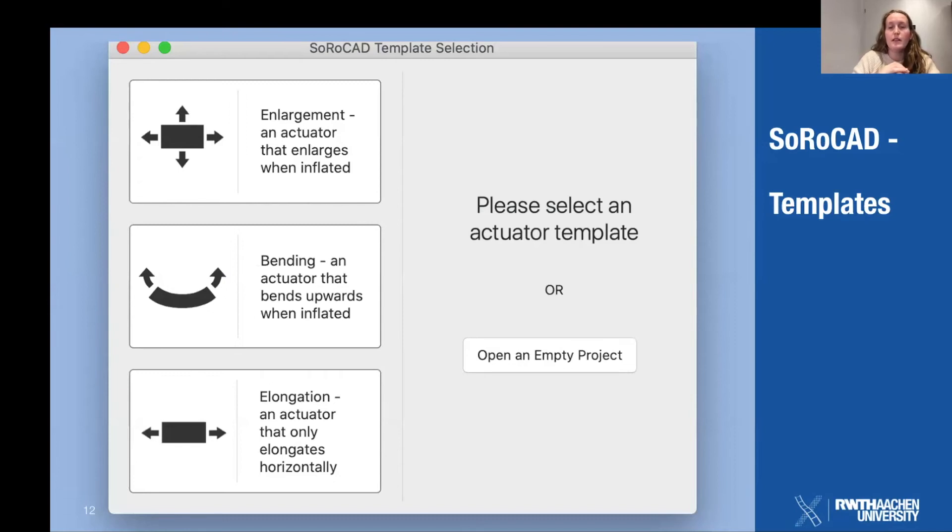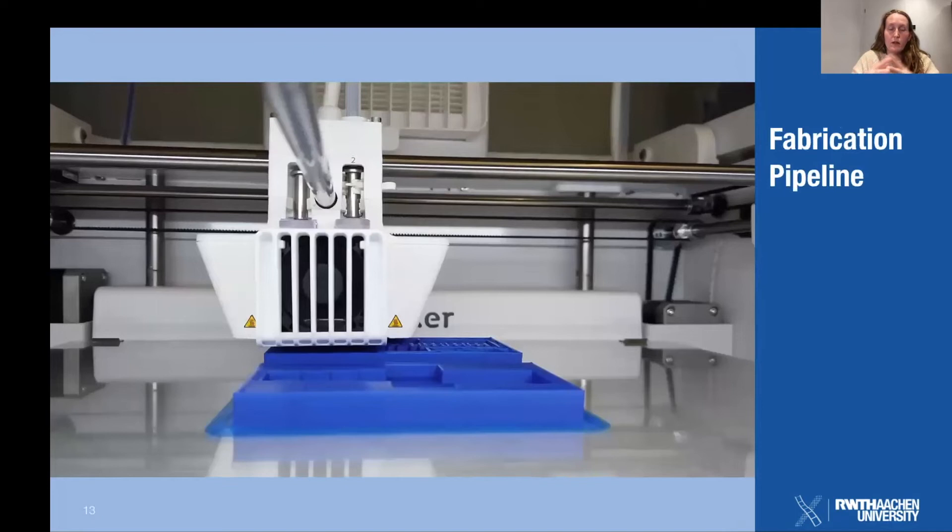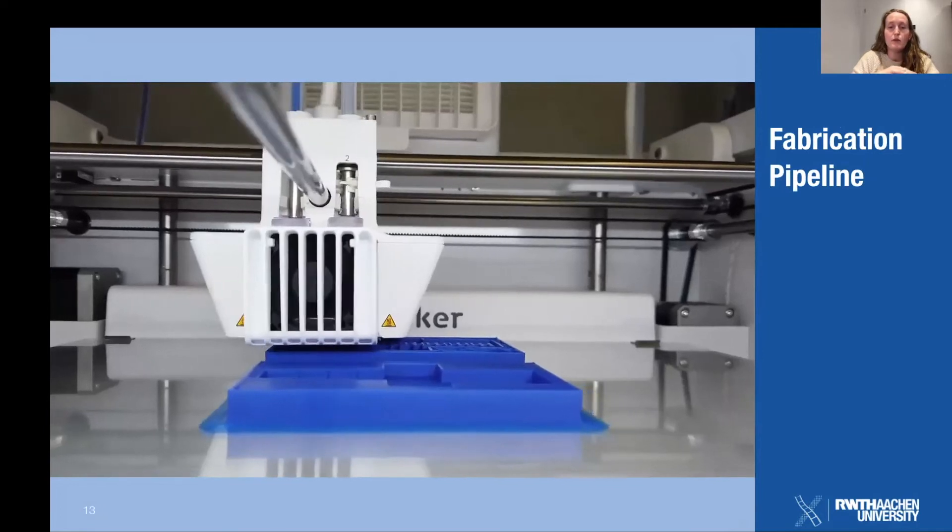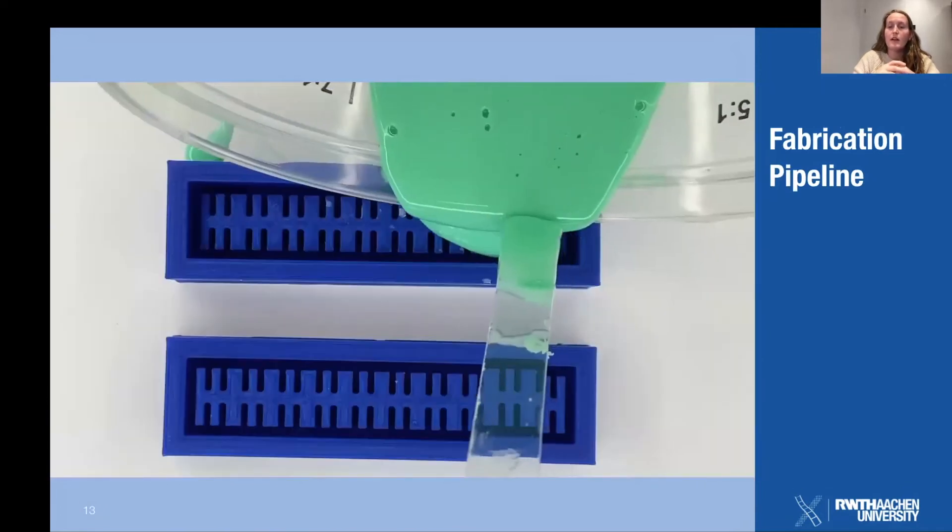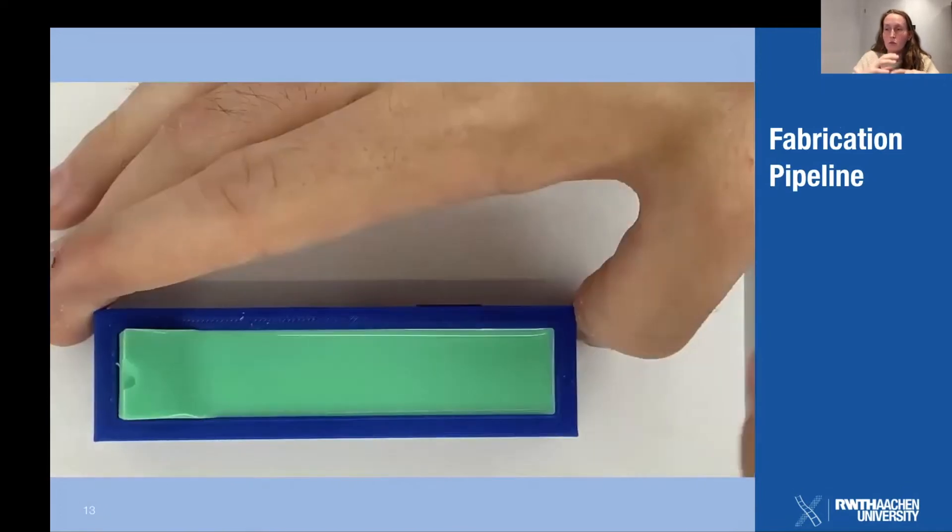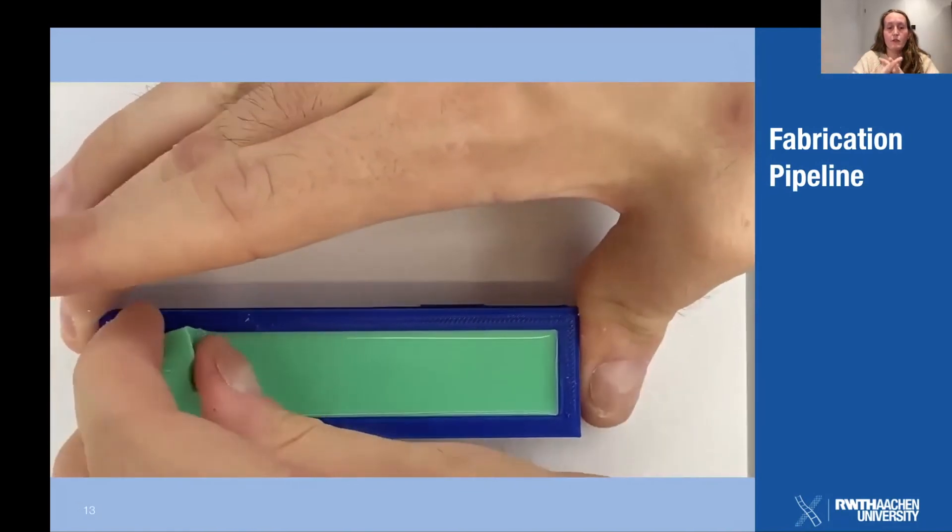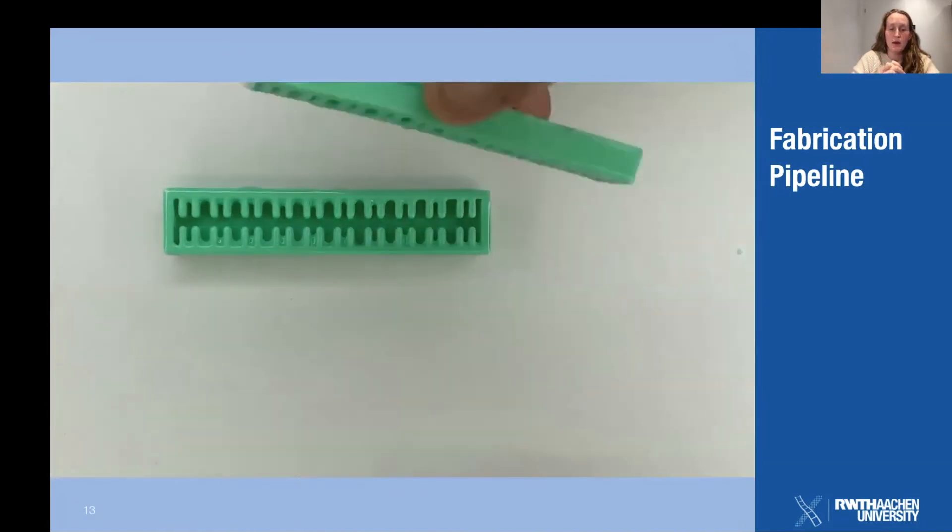So SoroCAD also offers templates for bending, twisting, and elongating actuators. When a robot is designed, the fabrication process consists of 3D printing the molds, filling them with silicone rubber, letting them cure, removing the casts, and then the robot can be actuated using a pump.